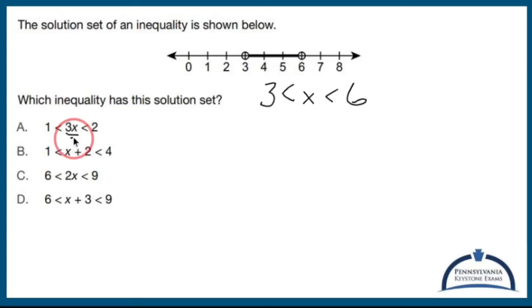So if I divide by 3 on all three parts, I'm going to get a third is less than x, which is less than two-thirds, not what I want.